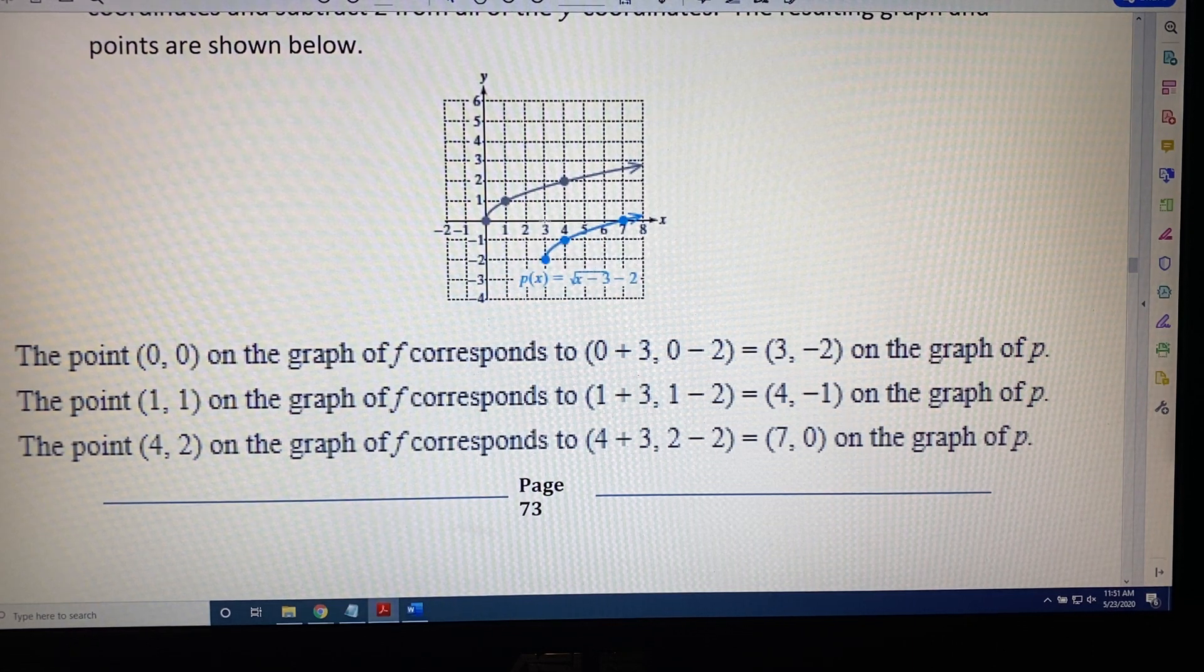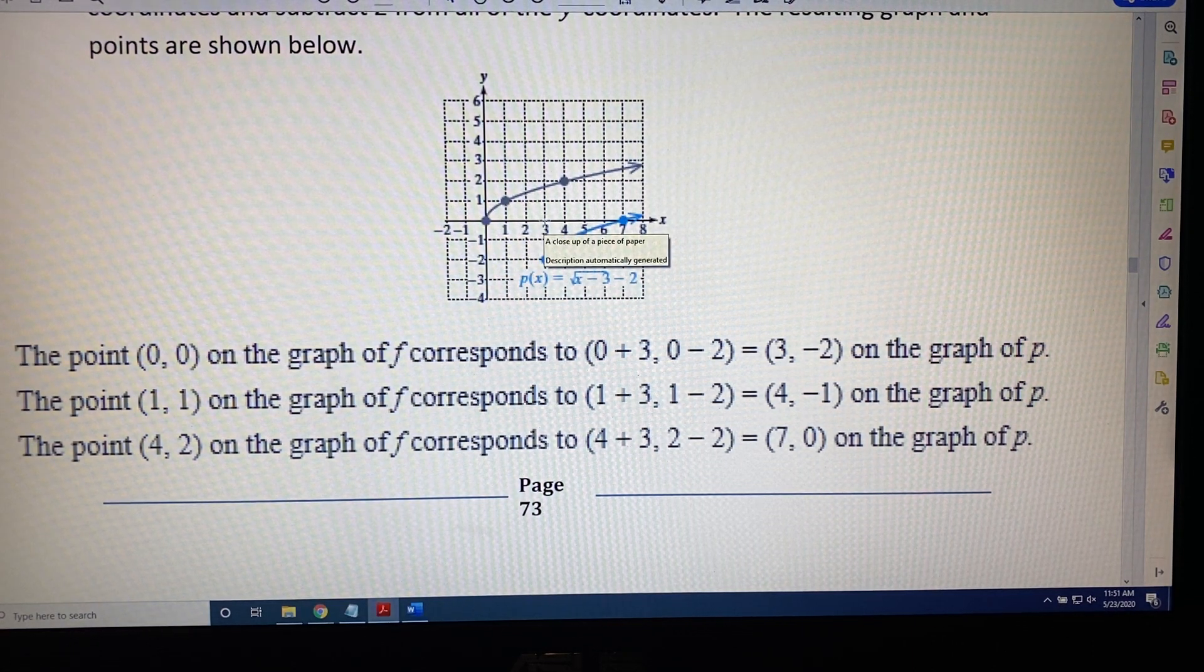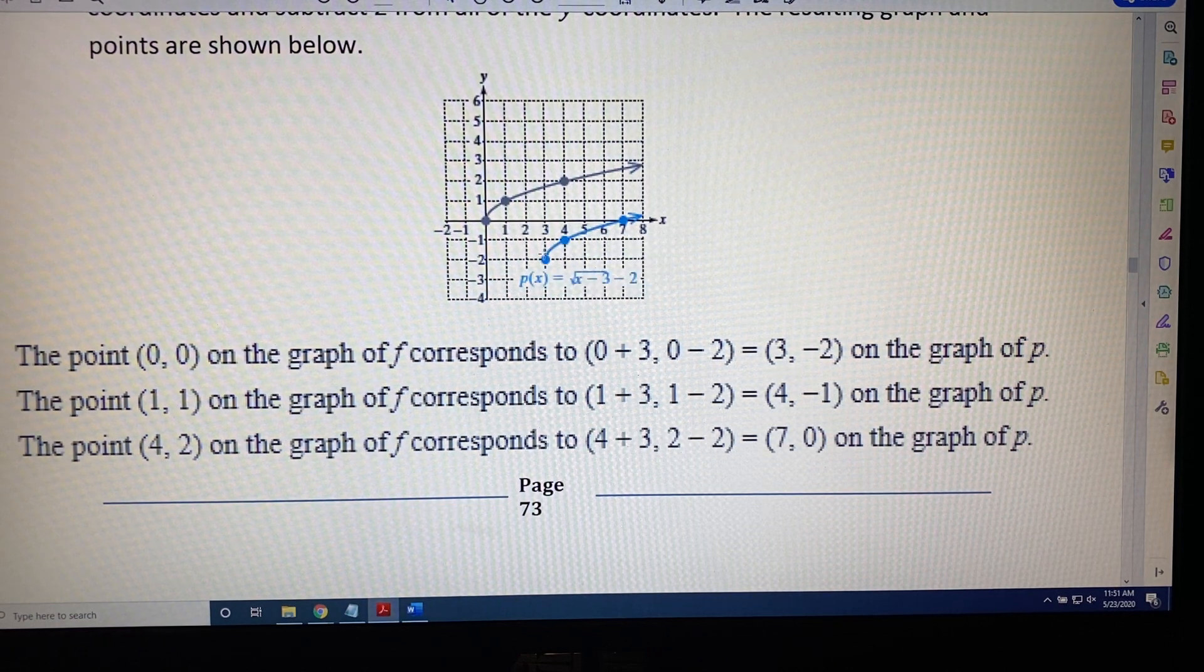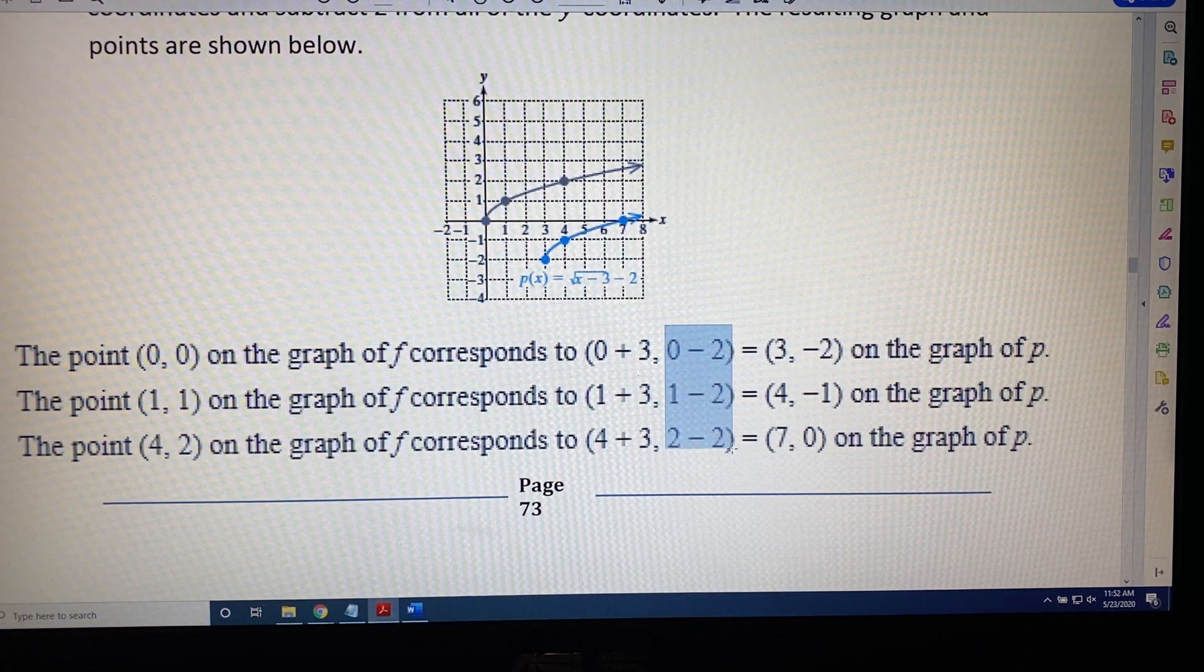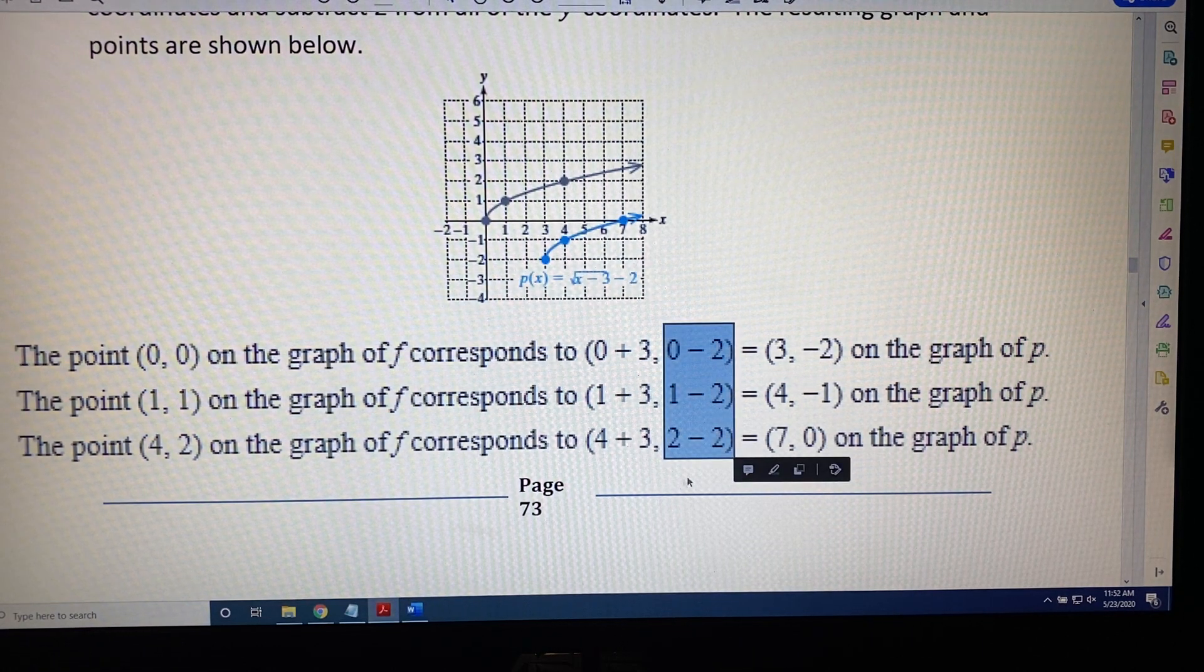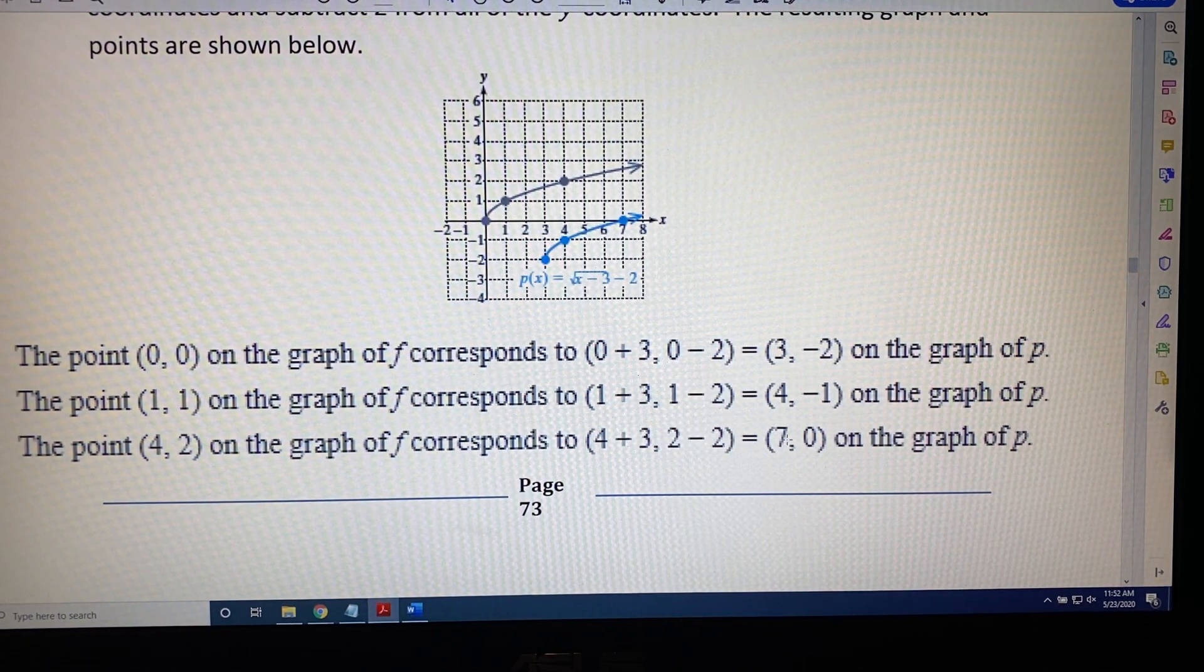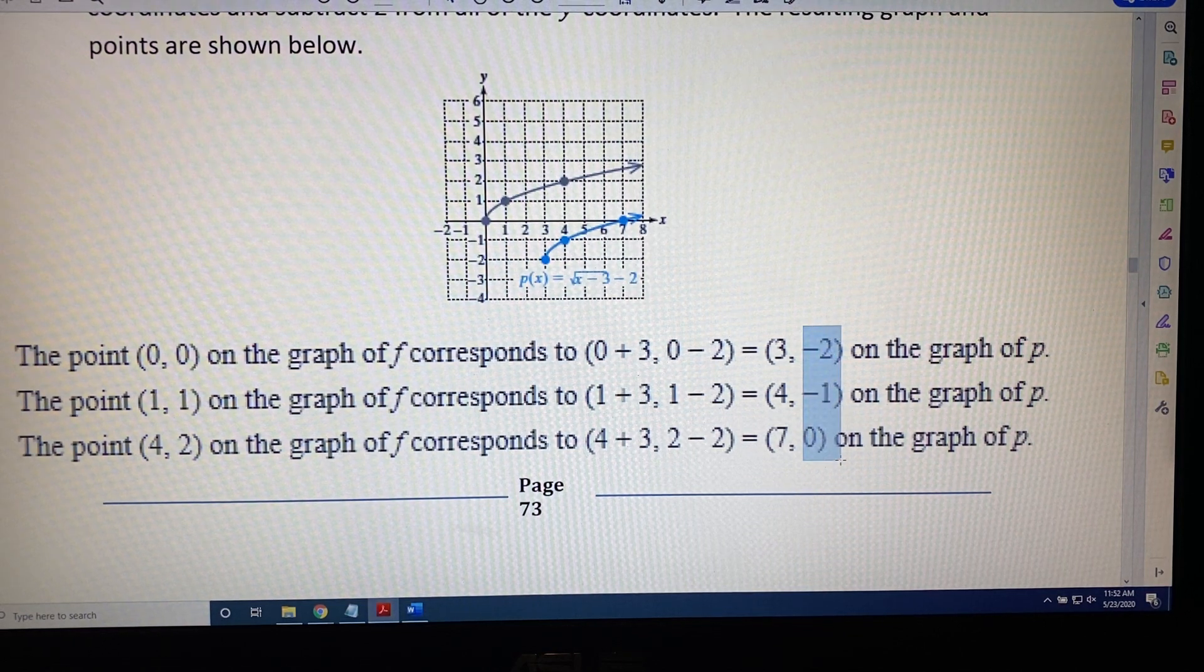Then, after we make the shift to the right, we want to go down two spaces. Well, down means the y coordinates are getting smaller, and that's represented by subtraction. So each of the y values from the point on the gray curve are going to have a subtract two, and that will give us the new y values on the blue curve.